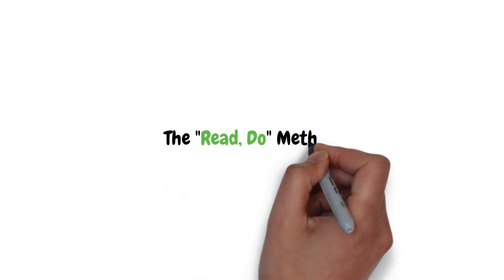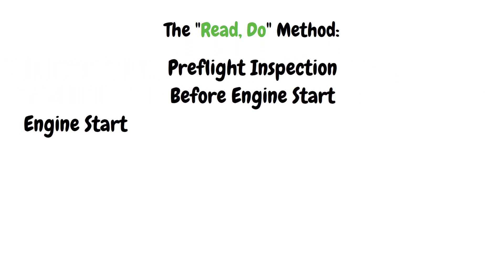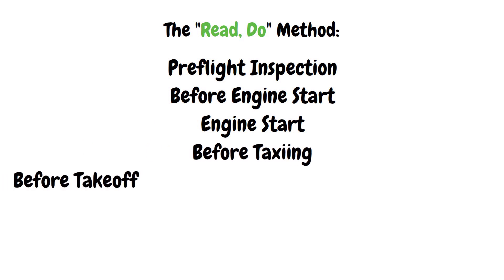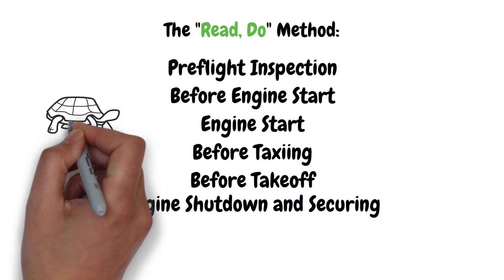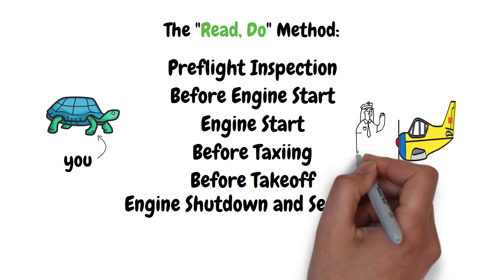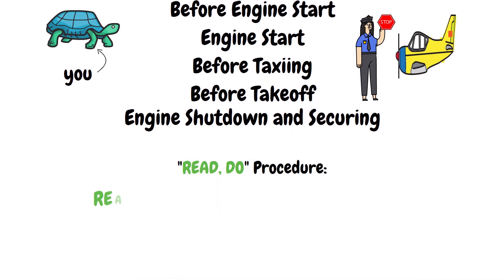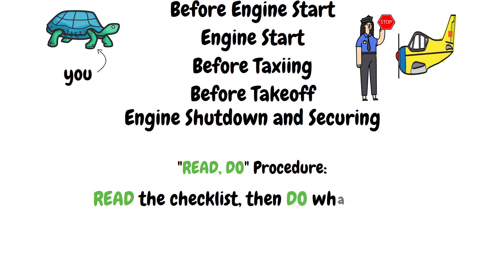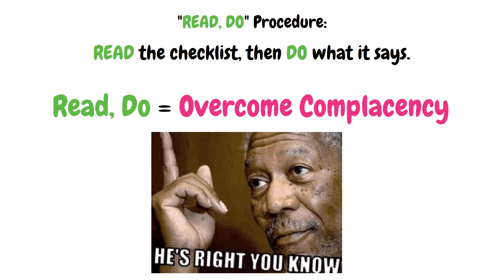The read-do method is used in the following phases of flight: pre-flight inspection, before engine starting, engine starting, before taxiing, before takeoff, and engine shutdown and securing. During these phases, you aren't rushed or experiencing a heavy workload — the airplane is not in motion. The proper procedure is to read the checklist, then do what it says. Reading the checklist and doing the tasks is also important for overcoming complacency.